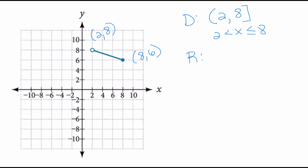For the range, the lowest y-value the graph takes on is 6, and the highest value is 8. However, because of the open circle at y equals 8, and there is absolutely no other place that has 8 as a y-value, it will be a parenthesis. So y-values are greater than or equal to 6 but less than 8.